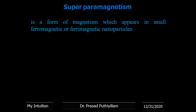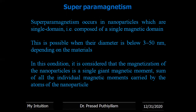Superparamagnetism is a form of magnetism which appears in small ferromagnetic or ferrimagnetic nanoparticles. This type of magnetism is found mainly in nanoparticles — materials whose size is less than or in the nanoscale, that is 10 to the power minus 9 meters, or materials in the 1 nanometer to 100 nanometer range. Superparamagnetism occurs in nanoparticles which have a single magnetic domain.